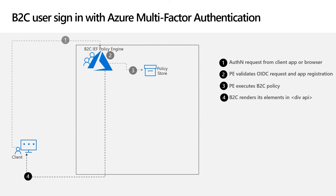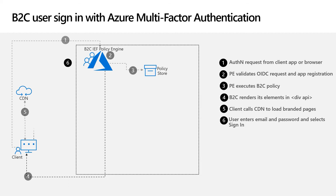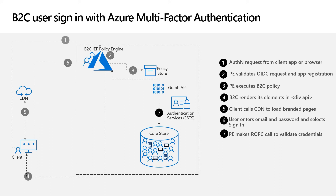Like the sign-up flow, B2C renders the necessary elements into the div container with the ID API. To load branded pages, JavaScript on the client browser pulls the custom HTML from your HTML storage and merges it with the HTML rendered to your browser from the policy engine. You can then enter your email and password and click sign-in. The policy engine then makes a Resource Owner Password Credential (ROPC) request to the authentication service — an API-based OpenID Connect request that is internal to the B2C backend environment.